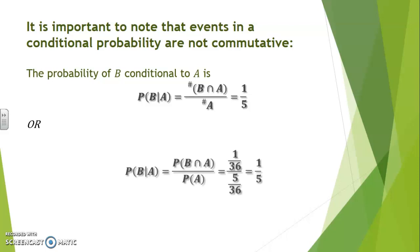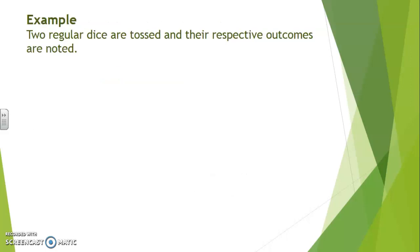This could also have been calculated through the ratio of probabilities. You've noticed that P of B conditional to A is 1 out of 5 and differs from P of A knowing B, which was 1 out of 6.